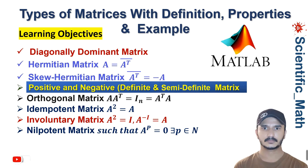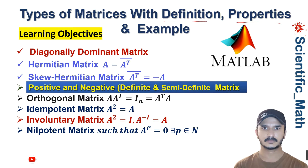Welcome to YouTube channel Scientific Math. We are studying types of matrices with definitions, properties, and examples. In previous lectures we studied diagonally dominant matrix, Hermitian matrix, and skew-Hermitian matrix. In this lecture we will discuss positive definite, negative definite, and semi-definite matrices, and solve some examples related to them.